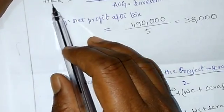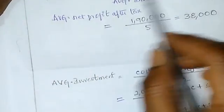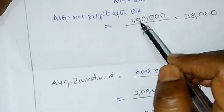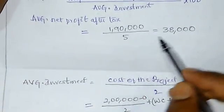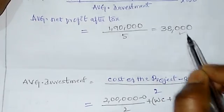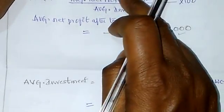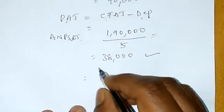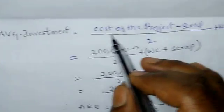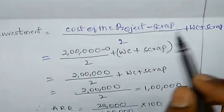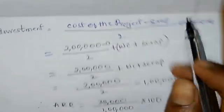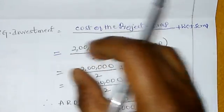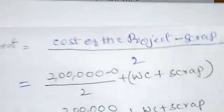ARR yela find out chayastham anante: ARR is equal to average net profit after taxes divided by average investment, into 100. For average investment formula: average investment = (cost of project minus scrap value) divided by 2, plus working capital, plus scrap value.